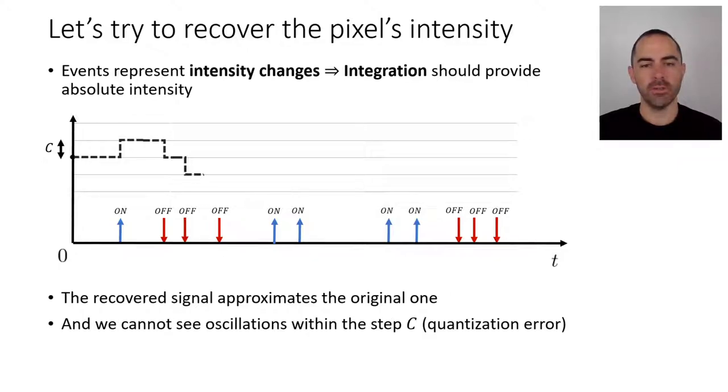And even more we cannot see the oscillations that happen within the quantization error, the quantization interval c, right? So it could be this flat line or it could be any oscillation that is smaller than c because that will not trigger another event. Therefore we will not see it. Okay so we do this for the rest of the events. Then basically the signal that we obtain is this one that is not the original one, it's just an approximation.